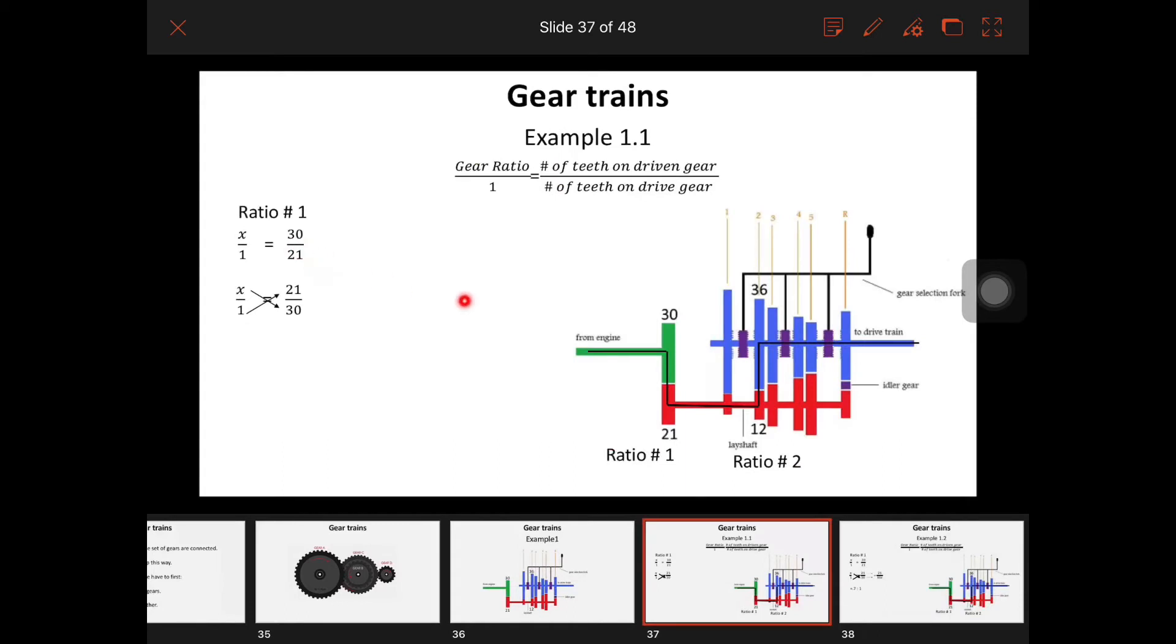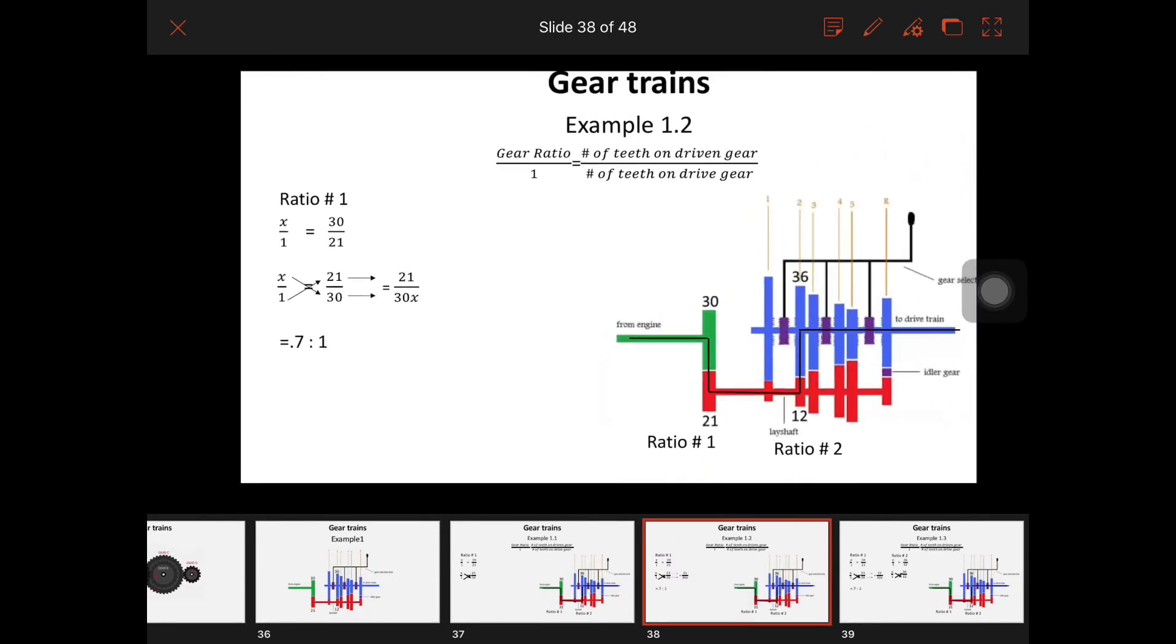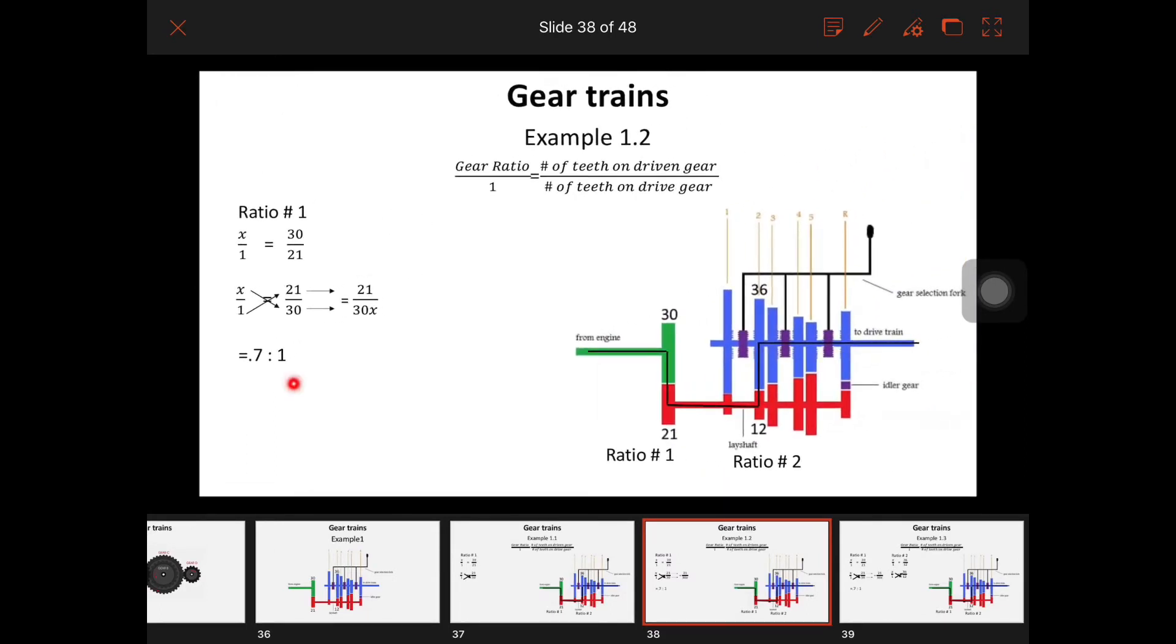Our ratio number one, which is going to be here at the front, is driven over drive, so 30 over 21. We're going to do that multiplication and find out that it ends up equaling 0.7 to one. So this ratio right here is 0.7 to one.